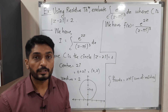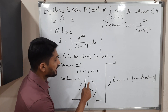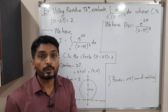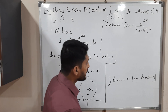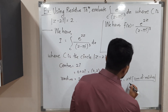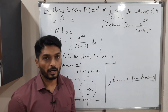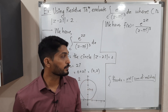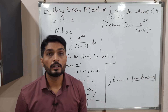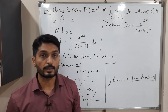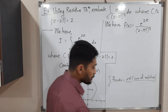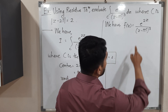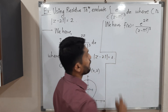If any point lies inside, we have to find the residue at that point. We take the sum of all such residues and multiply by 2πi, which gives the value of the integration. That means we solve the integration with the help of the residue concept. So our task is to find the singular points.